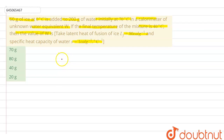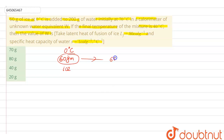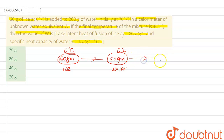In the calorimeter, when we add 60 gram of ice initially at 0 degree Celsius, first it melts to 60 gram of water. The temperature will still be 0 degree Celsius after melting, and then it will heat up to the final temperature of the mixture, which is 40 degree Celsius.